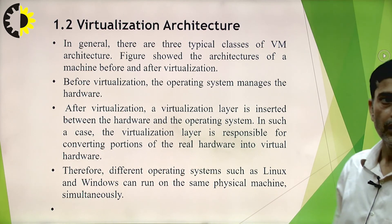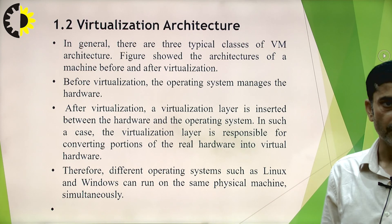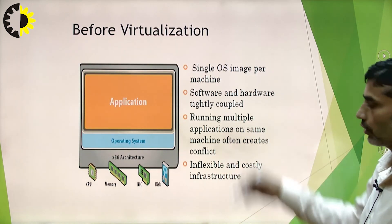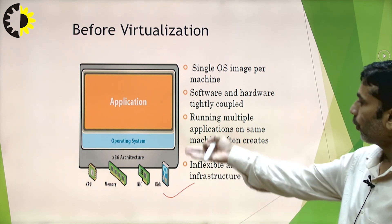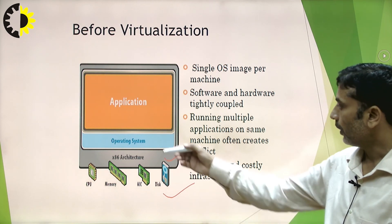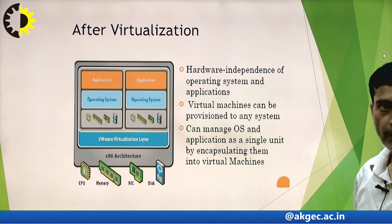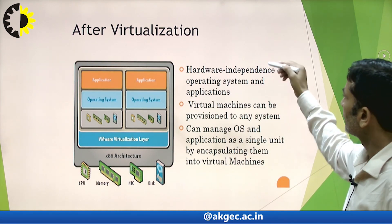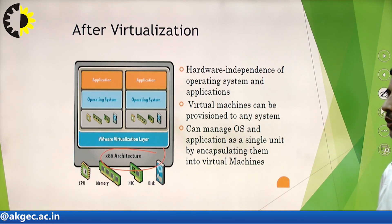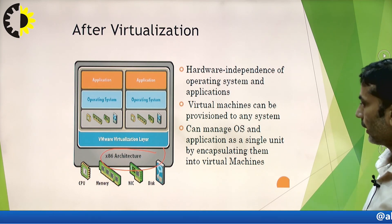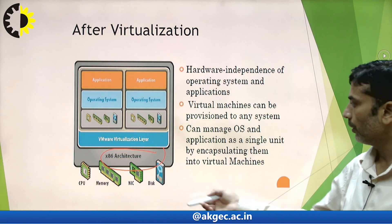Regarding virtualization architecture, there are three typical classes of VM architecture. The figures show the architecture of a machine before and after virtualization. Before virtualization, you have hardware, an operating system providing the interface between applications and hardware, and the applications themselves. After virtualization, this is the scenario with the hardware — the x86 architecture, basically the 8086 architecture — and many VMware-type virtualization software programs are designed for x86 architectures.